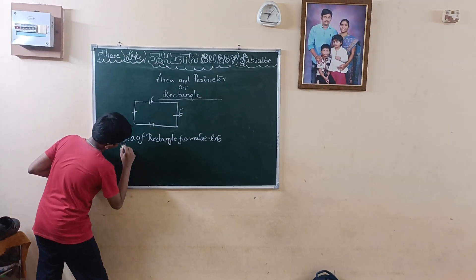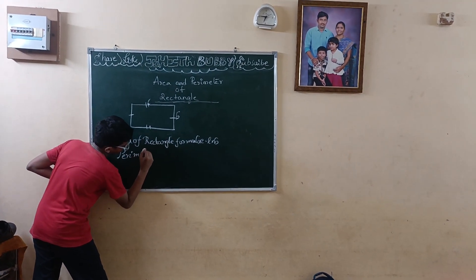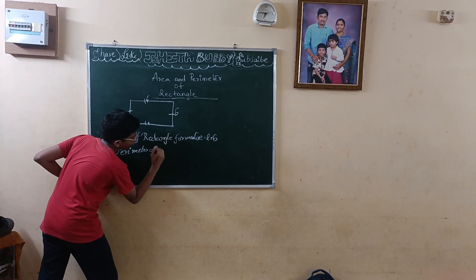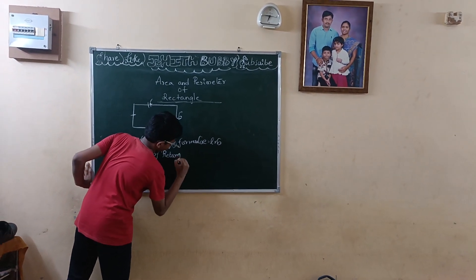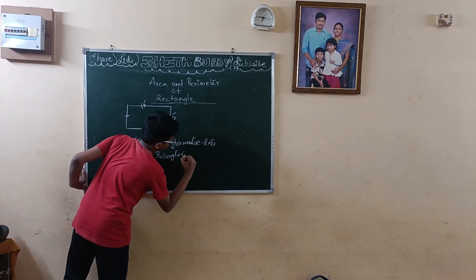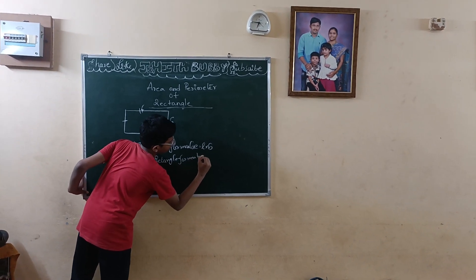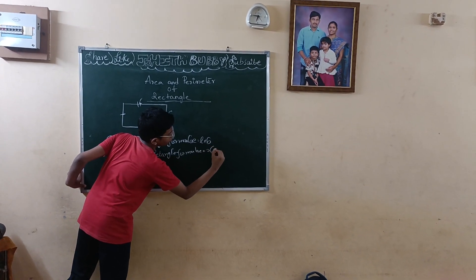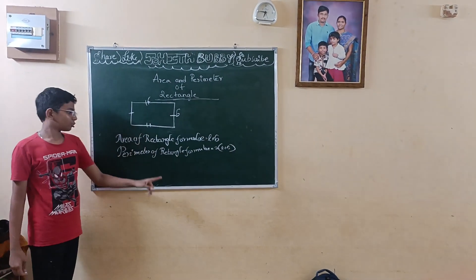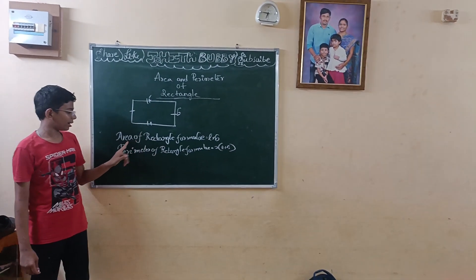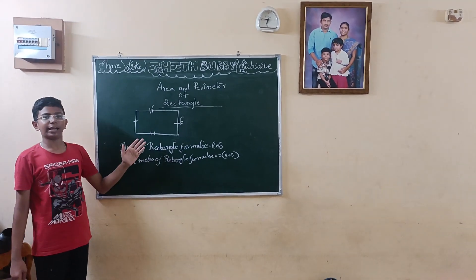Now, the perimeter of the rectangle. The formula equals 2 into L plus B. So this is the formula of area, and this is the formula of perimeter of a rectangle.